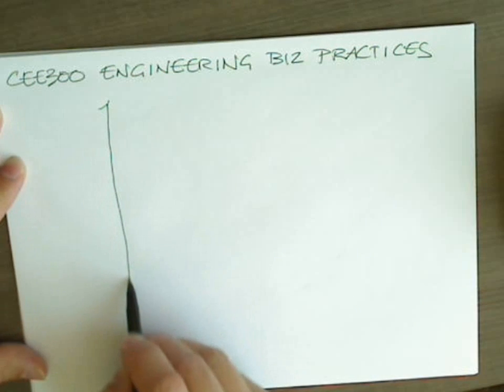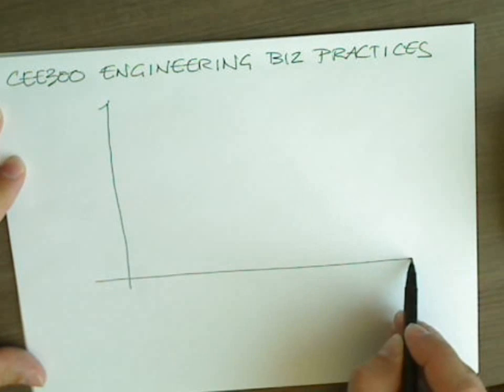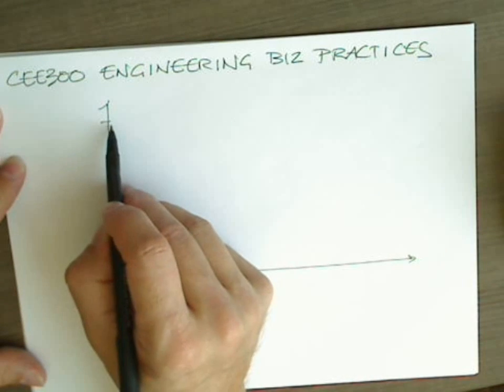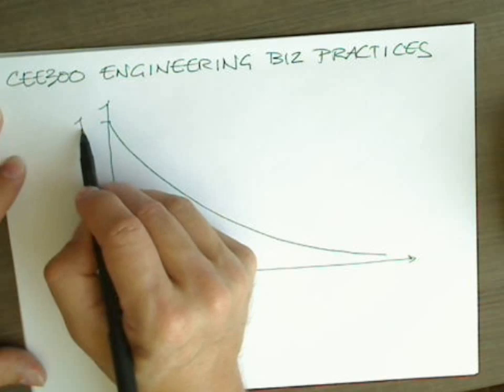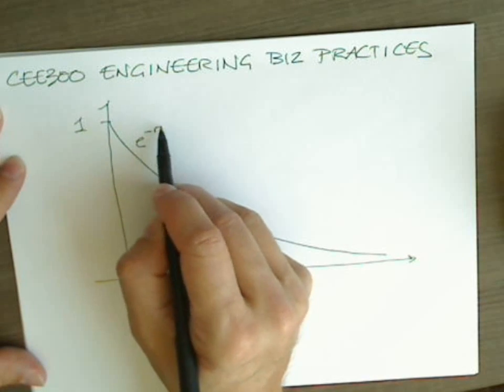In the last video, we looked at the classic exponential discount formula, E to the negative RT.